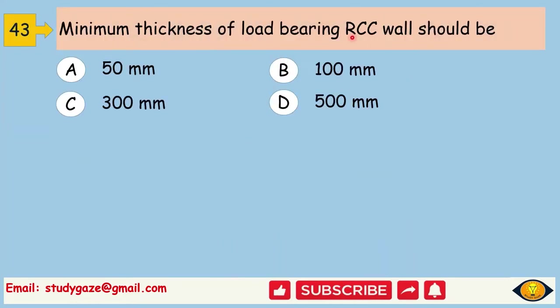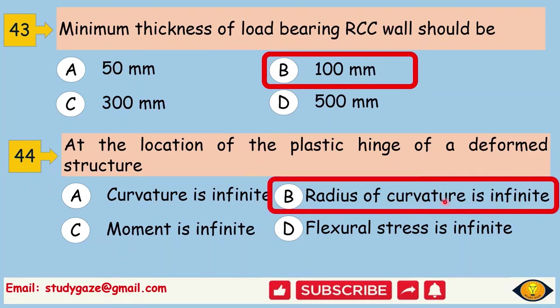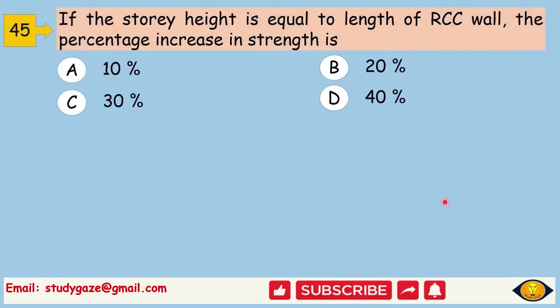Minimum thickness of load-bearing RCC wall should be 100 mm. At the location of the plastic hinge of a deformed structure, radius of curvature is infinite. If the story height is equal to length of RCC wall, the percentage increase in strength is. Answer is 10%.